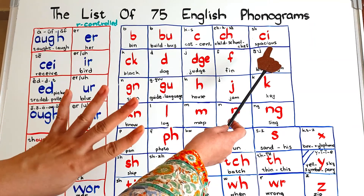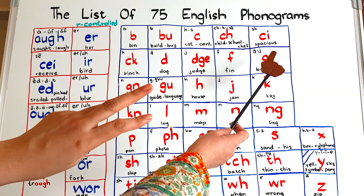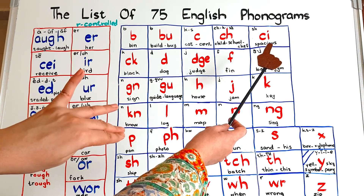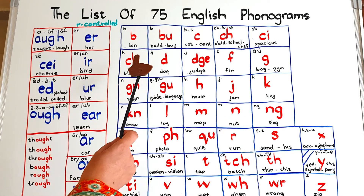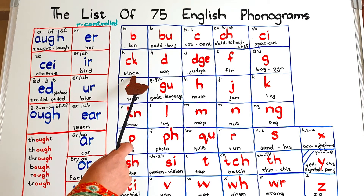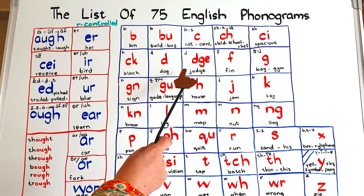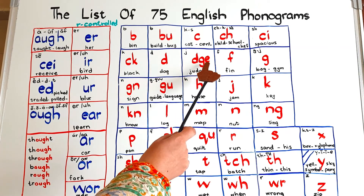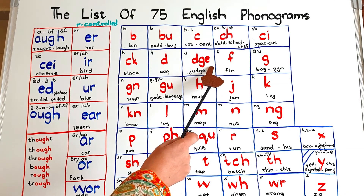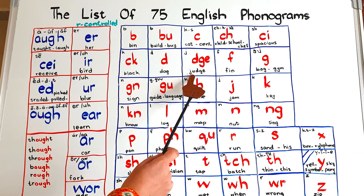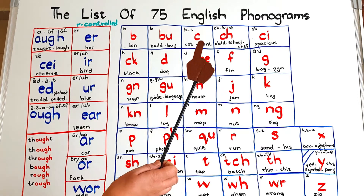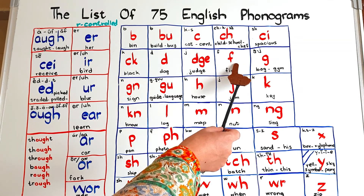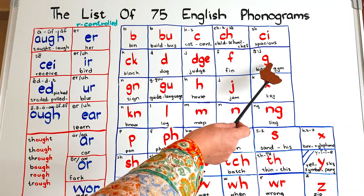CI says SH as in 'spacious'. For the SH sound we have four different spellings: CI, TI, SI, and SH. SH is the English spelling and the other three are Latin. Then we have the two-letter CK — the pronunciation is simply K and we use CK after a single short vowel sound. D is as in 'dog'. The trigraph DGE says the J sound, but only at the end of a word and after a short vowel sound.